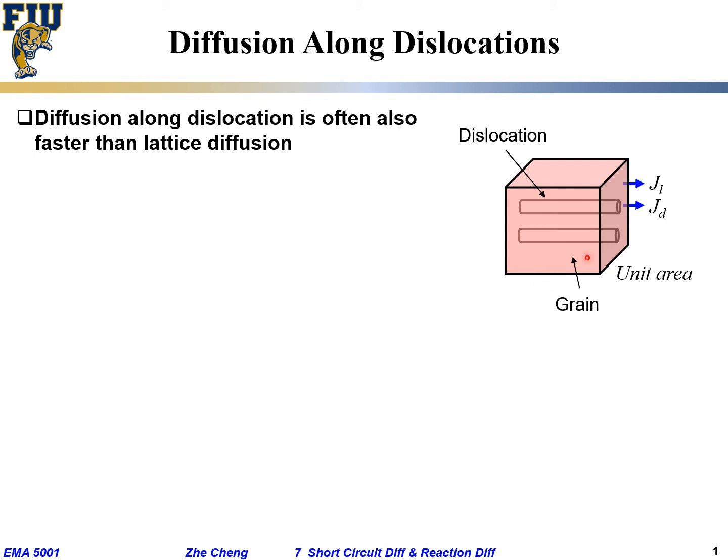So what do we have here? This is our grain, but we draw and illustrate these tubes to represent grain boundaries.